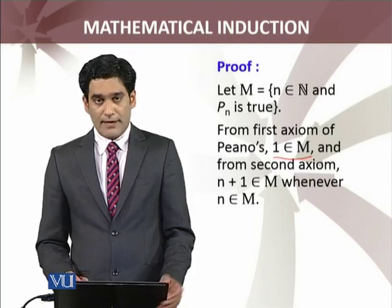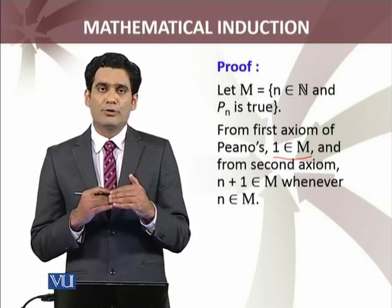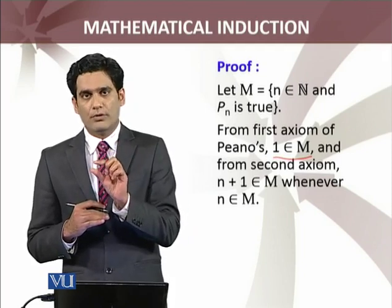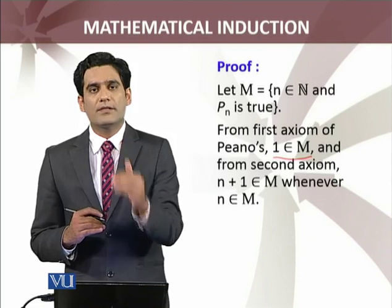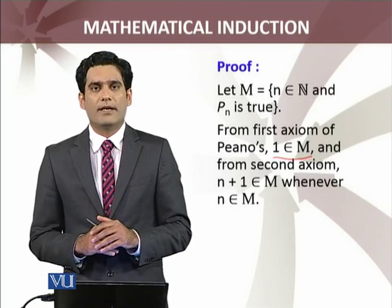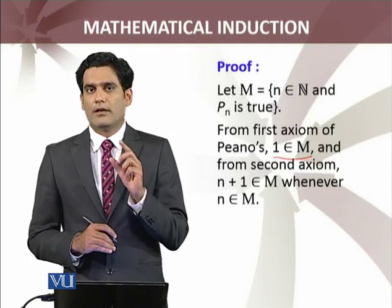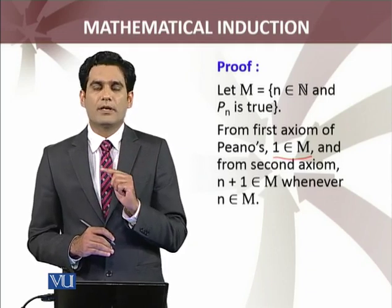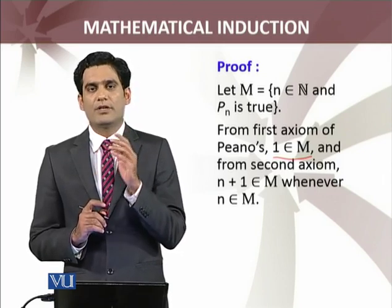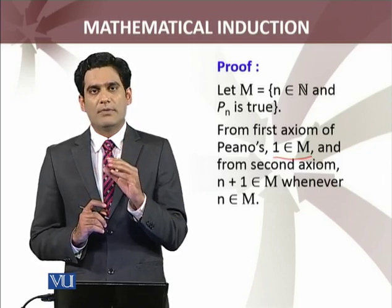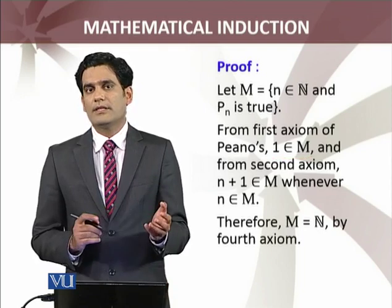From the first Peano axiom, 1 belongs to M. And from the second condition of the principle of mathematical induction — the inductive step — Pn true implies Pn+1 true. This means if n belongs to M, then n+1, its successor, also belongs to M. Now applying the fifth Peano axiom to the set M: M is a subset of the natural numbers which contains 1, and whenever n is in M its successor is also in M. So there is only one possibility — that M equals the set of natural numbers.